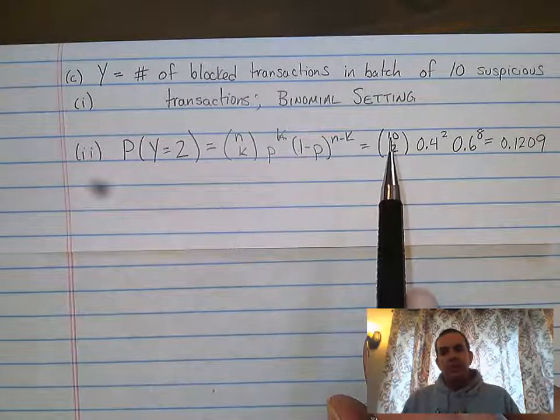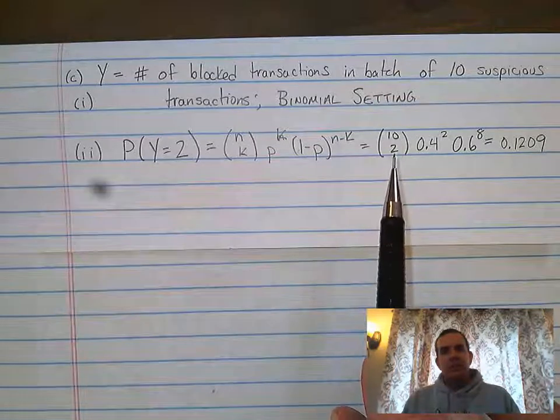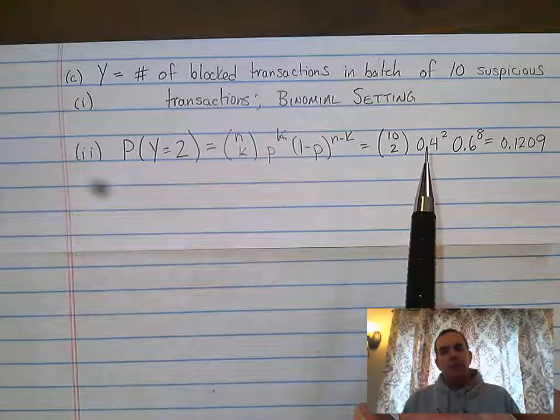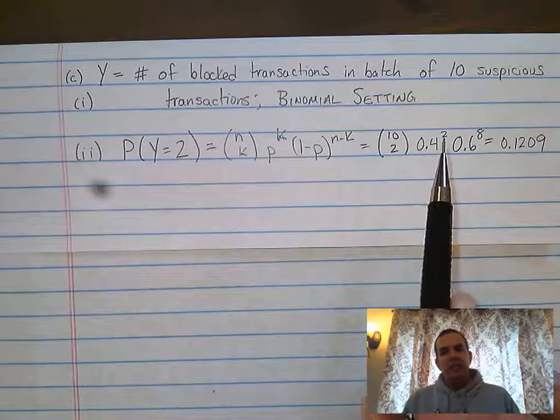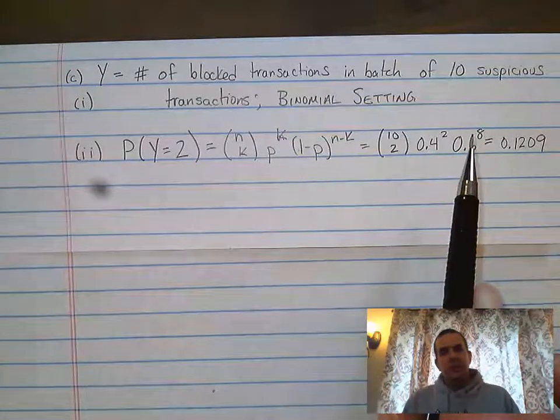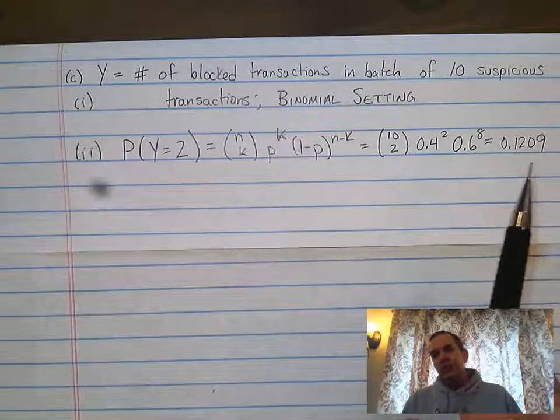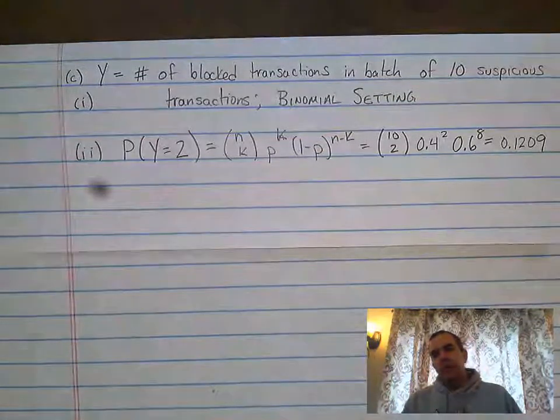I go ahead and plug in the numbers. 10 is my sample size. 2 is my number of successes. 0.4 is my probability of success, I want two of them. 0.6 is my failure probability, I want eight of them. And this gives me a probability of 0.1209.